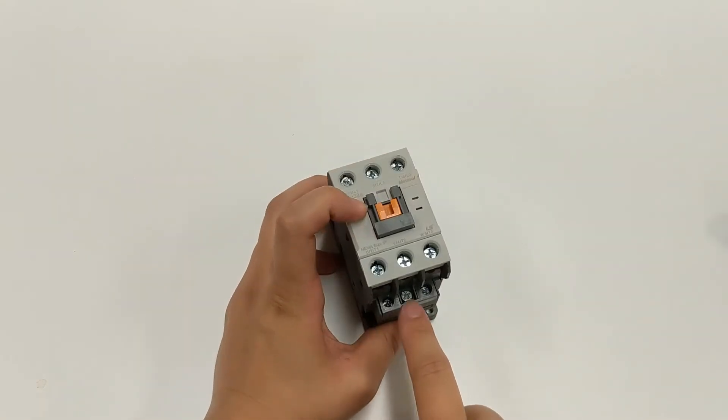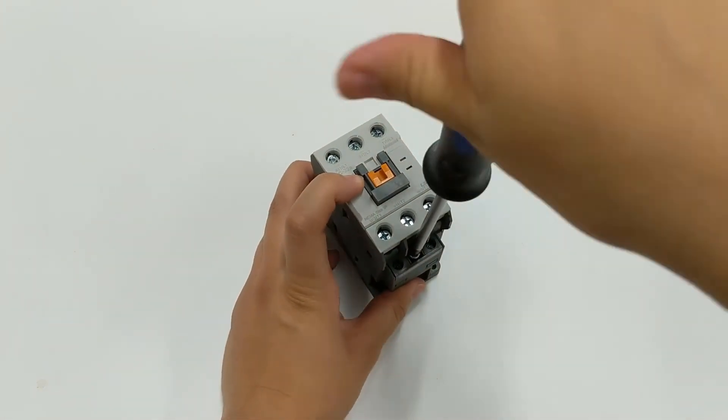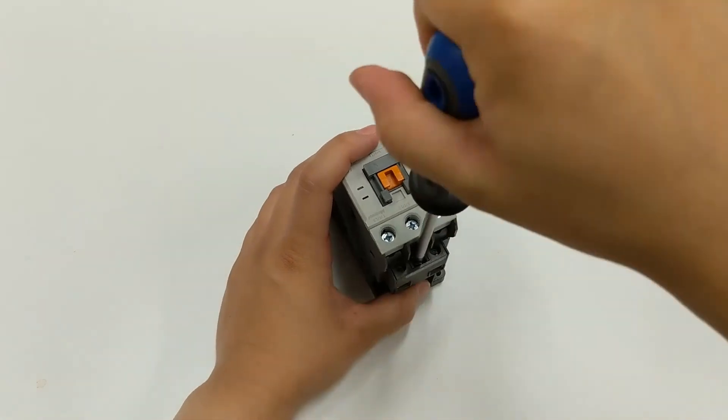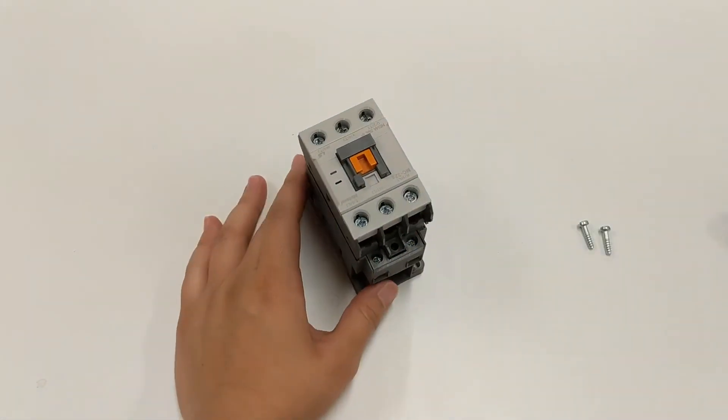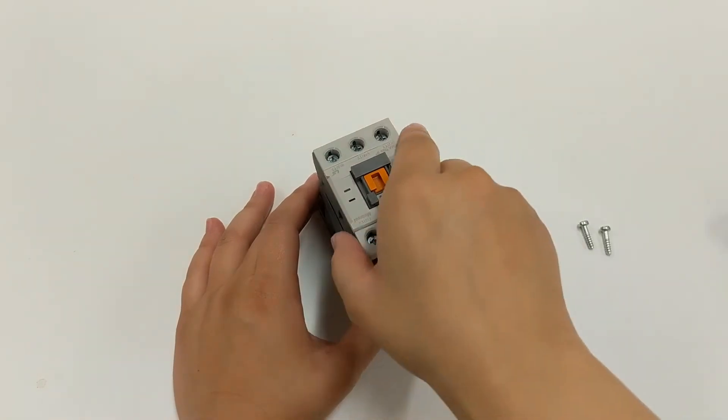Next remove the center screw between A1 and A2 on each side. Note that the 150M frame has two screws on each side. Pull the top half off the bottom half and take out the spring.